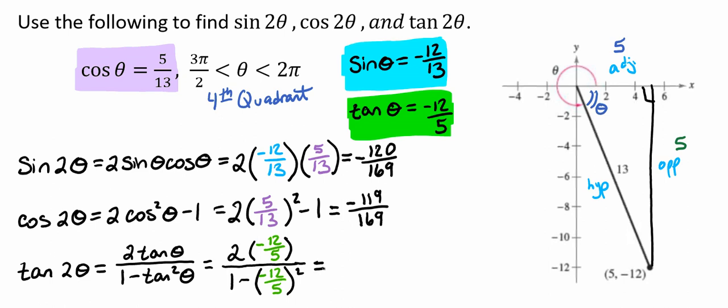If we plug in 2 times negative 12 over 5, all divided by 1 minus negative 12 over 5 squared, that's going to leave us with a positive 120 over 119.